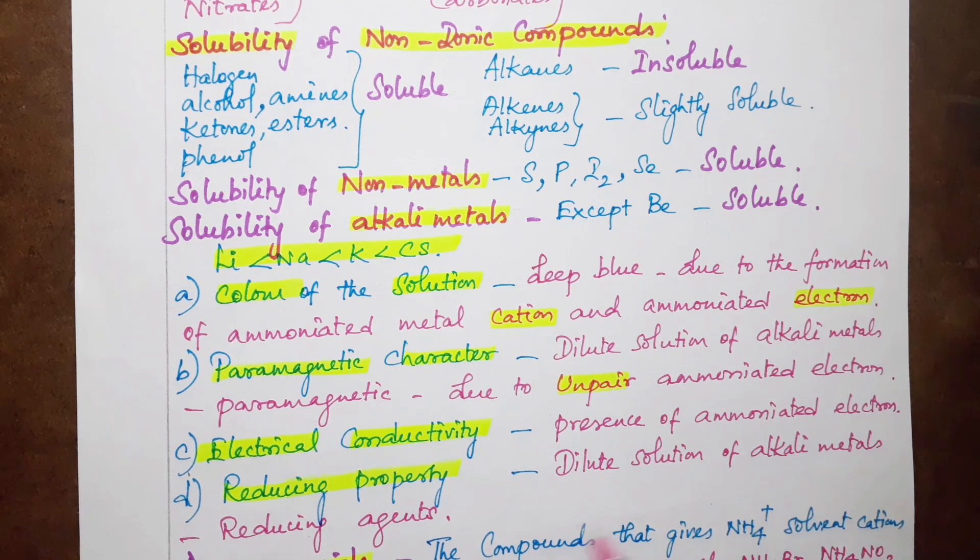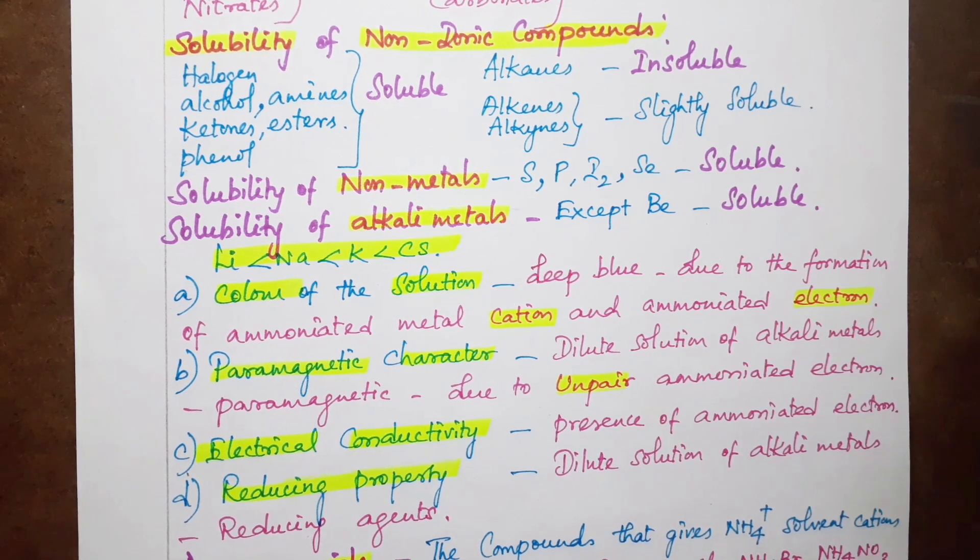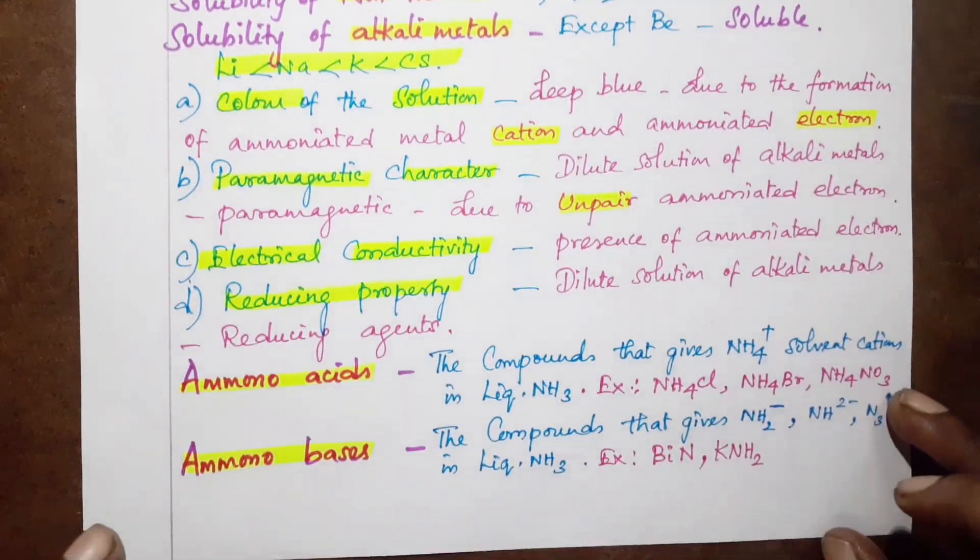Alkali metals in dilute solution - lithium, sodium, potassium, rubidium, cesium - these dilute solutions will be used as a reducing agent. Now let's go to another important point.